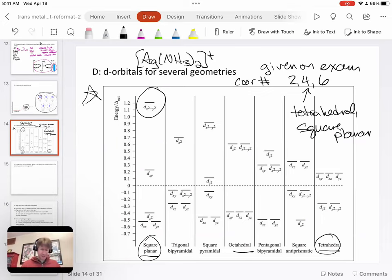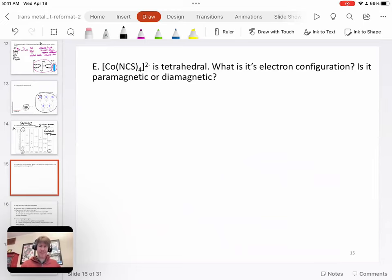So now how do we use this? So this one says that cobalt with four of the thiocyanate ligands with the N attached, that's what the N means. It's closest to the cobalt. Thiocyanate, by the way, is a negative one ion. And it does have the N as the donor of the pair of electrons in the Lewis base to the cobalt.